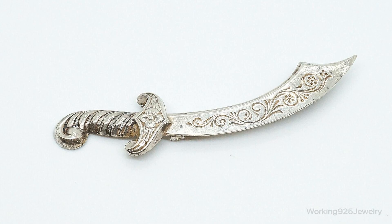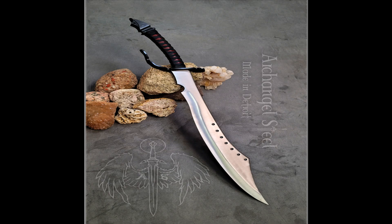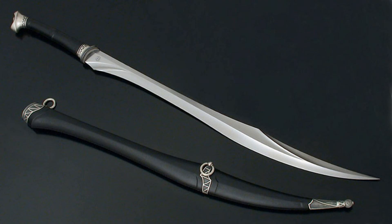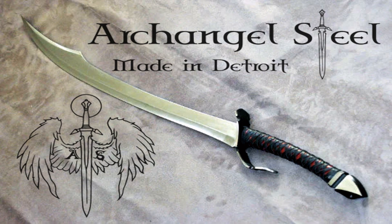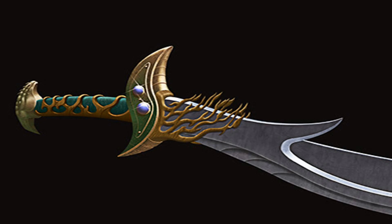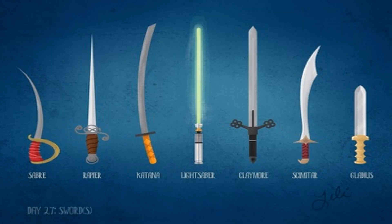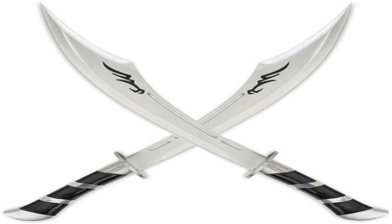The curved blade of the scimitar served multiple purposes. The curve allowed for a wider cutting surface while providing greater momentum for the user, making it easier to deliver devastating cuts. Additionally, the curve meant that the edge of the sword would remain sharp for longer periods, as it spread the force of impact across a wider area. Another important feature of the scimitar is its single-edged blade, which is easier to sharpen and maintain than double-edged swords. Many scimitars also had a reinforced back edge, called a yelman, which allowed for effective backhand strokes. Overall, the design features of the scimitar made it a versatile and effective weapon.